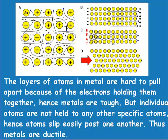We can see this in these pictures. In A, mobile electrons are moving around between the gold atoms. In B, electricity is able to be passed through the metal cations. C shows the transfer of heat between them. D shows how metals are malleable and ductile — pushing where the red arrow indicates just slides the atoms over. The layers of atoms are hard to pull apart because electrons hold them together, but atoms slip past one another, which is what makes metals ductile.